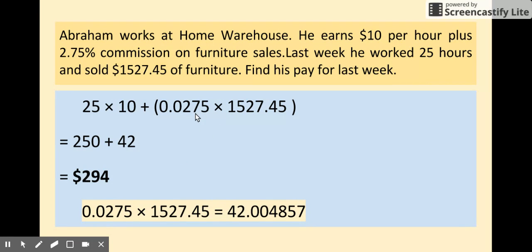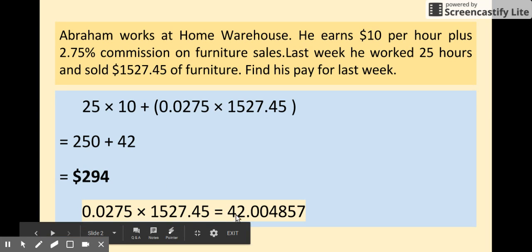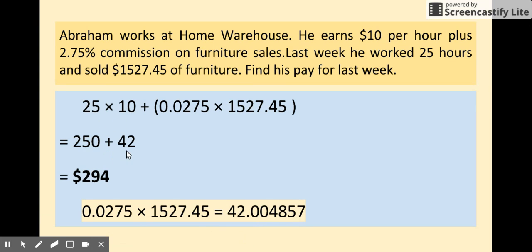So we will do the parentheses first according to PEMDAS. That would get us the number 42.004857, so we are going to round it to 42.00. So we do 250 that we got from 25 times 10, and plus 42.00.